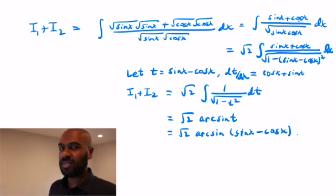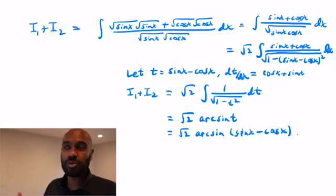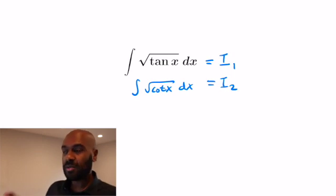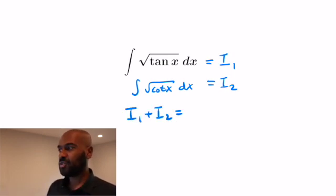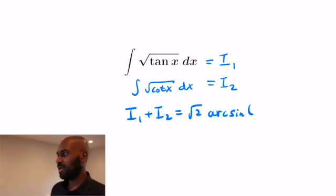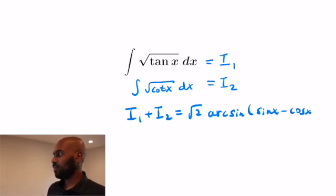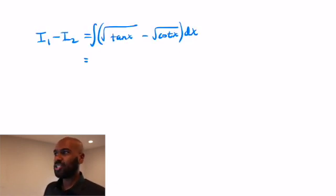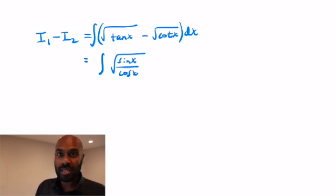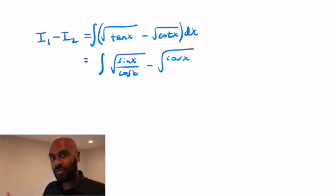So now we know what the sum of the two integrals is. We can write down that i1 plus i2 equals the square root of 2 times arcsin of (sin x − cos x). Now we turn to the difference i1 minus i2, which will take a similar approach but the integral and substitution will look quite different.